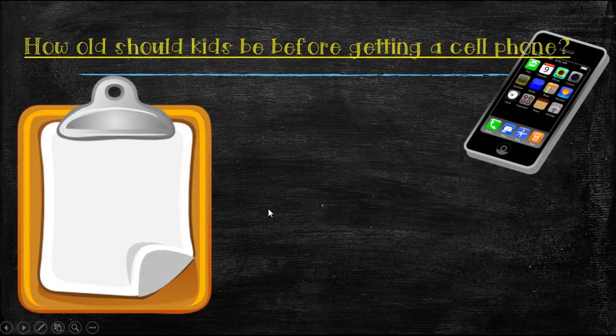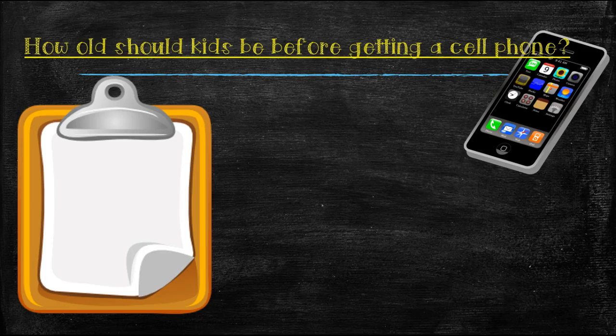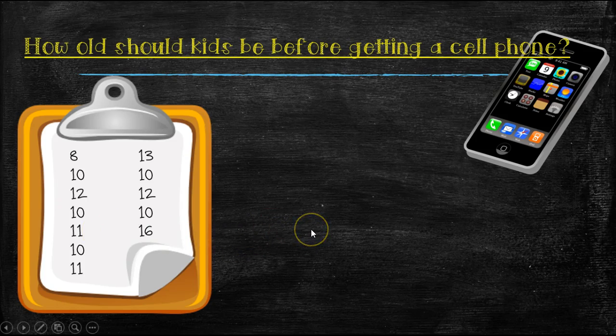So here is a question that I surveyed teachers for. And the question was, how old should kids be before getting a cell phone? So here we collected some data. Some teachers said eight, some teachers said 13, some said 10. So we need to figure out how are we going to interpret the data here, and how are we going to organize it in a way that makes it easier to show our results?